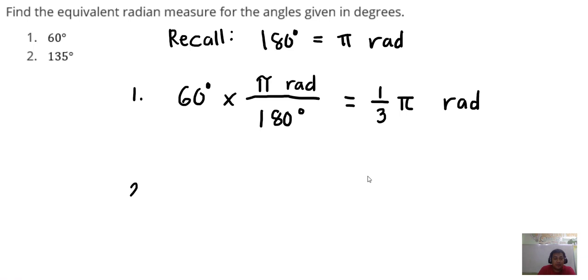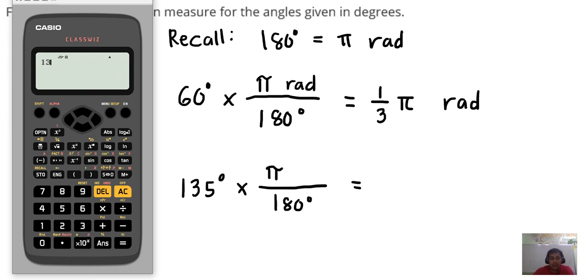For number two, 135 degrees. Basically the same process, we multiply this by pi over 180 degrees. So 135 over 180 is three-fourths.